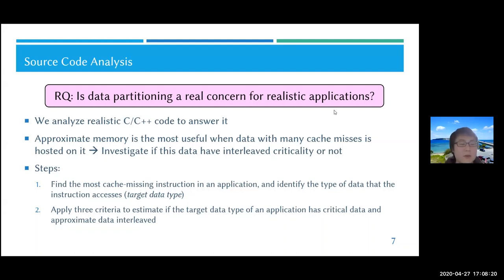The concrete steps are: in the first step, we find the instruction that encourages the largest number of cache misses in an application, and identify the type of data that this particular instruction accesses. We call this the target data type. In the second step, we apply three criteria to this data type to estimate if it has critical and approximate data interleaved.